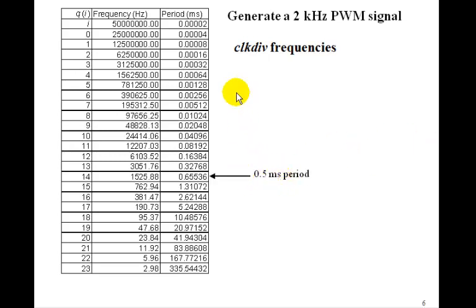And if we look at our clock divide table that we had, you see that a Q14 would give us a period here of 0.65 milliseconds, which is more than 0.5. So we need to get at least to Q14 to get up to half a millisecond.